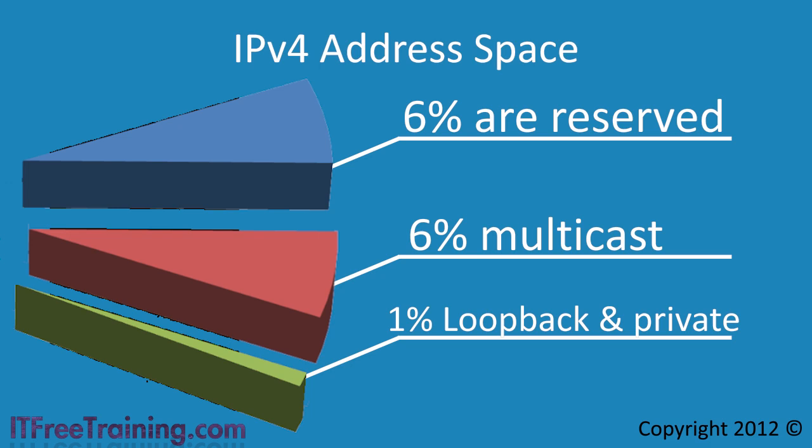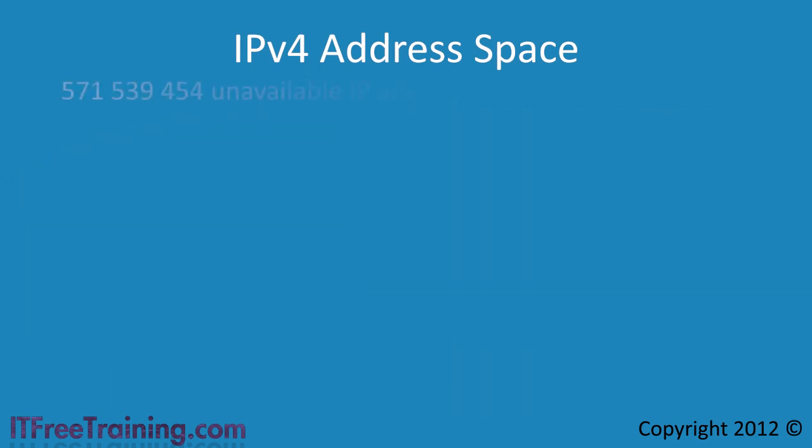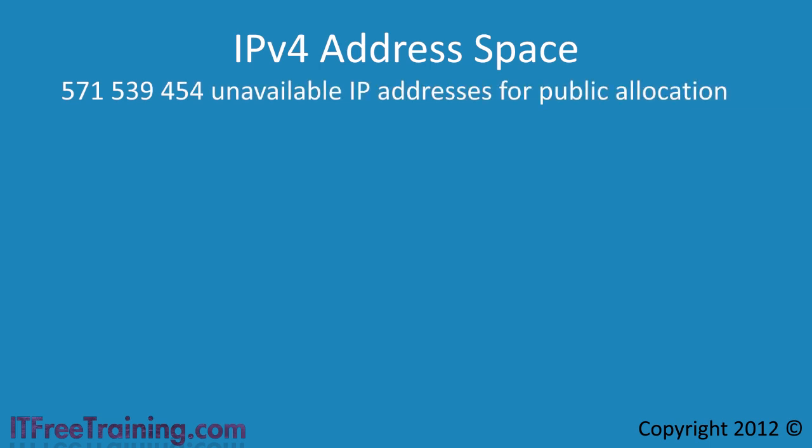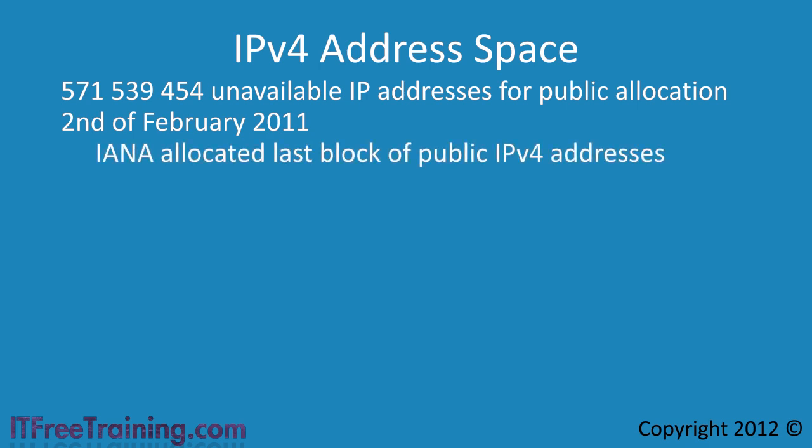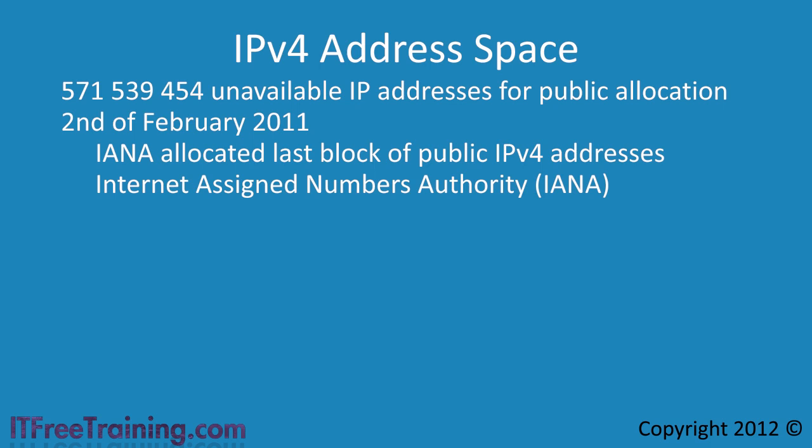This may not seem like a lot, but it translates to just over 570 million IP networks. On the 2nd of February 2011, IANA allocated the last block of public IP version 4 addresses. The reality is that these addresses are allocated to ISPs or countries and have not been reallocated as yet. Depending on how fast they use their allocated addresses, it could take as little as months or even years before they run out. In the future you may have to shop around to get a public IP version 4 address as they start running out.